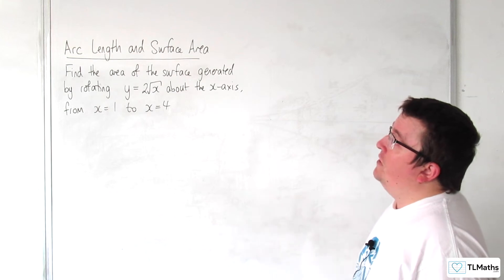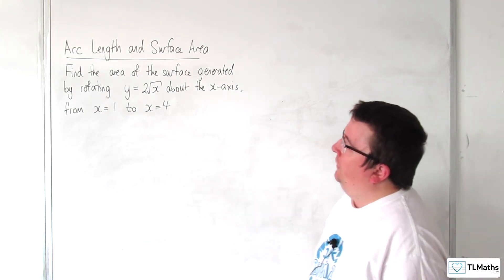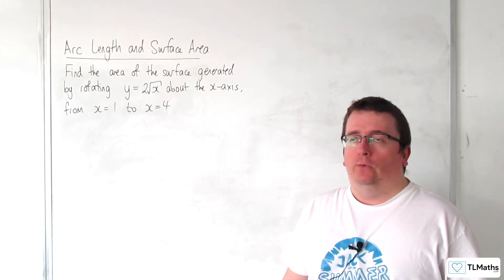In this video we're going to find the area of the surface generated by rotating y equals 2 root x about the x-axis from x equals 1 to x equals 4.